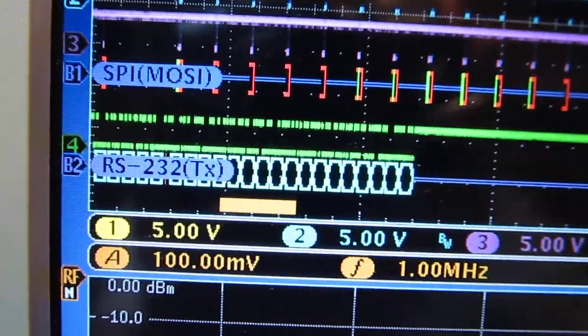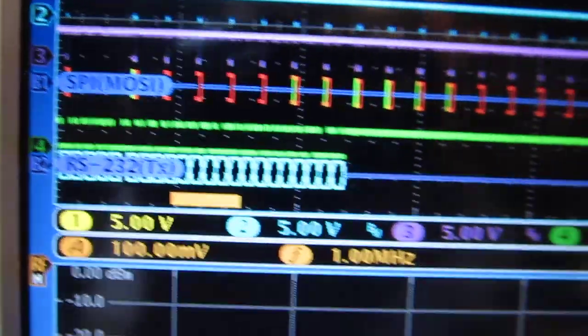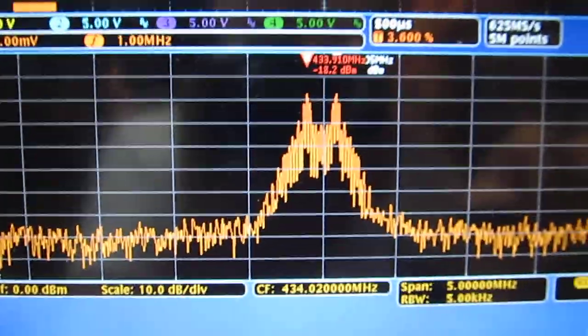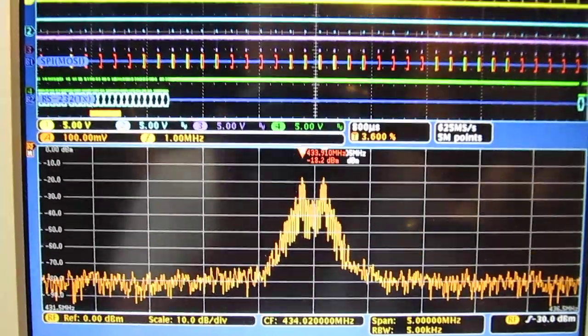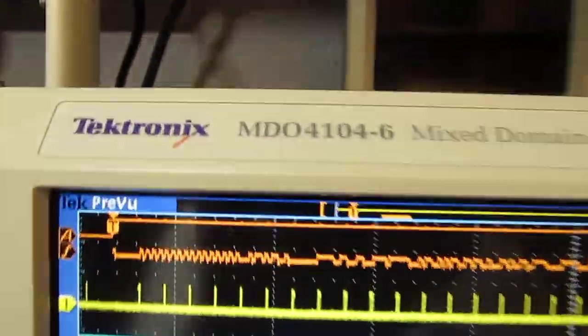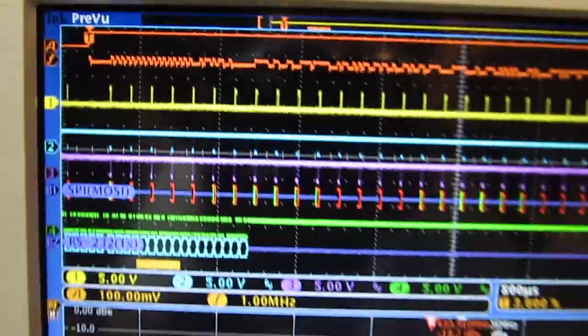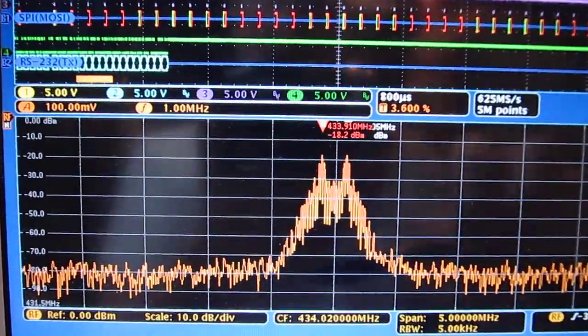But before we do that let's take a look at some of the details of the spectrum. So you can see the spectrum on the spectrum analyzer portion of the display and the nice thing about this scope is it allows you to tie in your analog and digital signals with what the RF is doing over time.